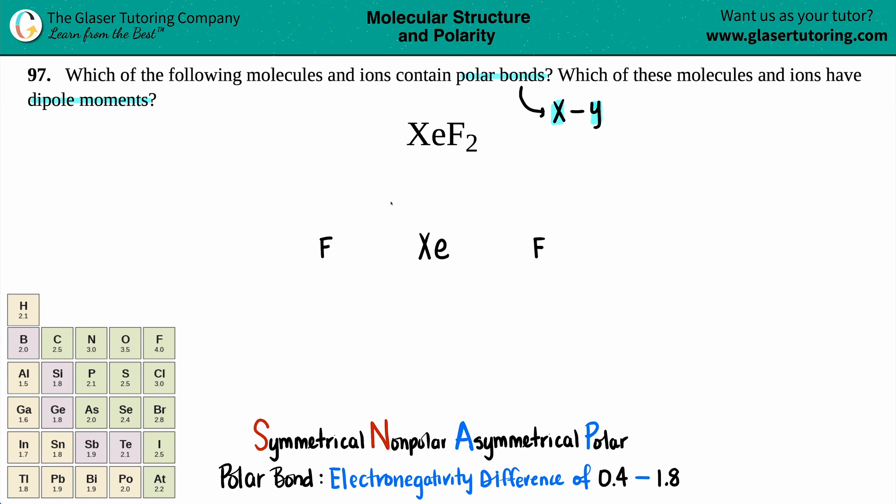So now, two fluorines done. Each one of these have to have a single bond, and then each fluorine has the six dots around it to get the octet.